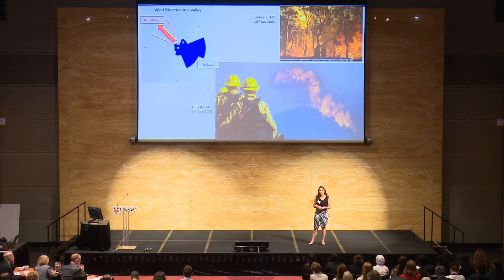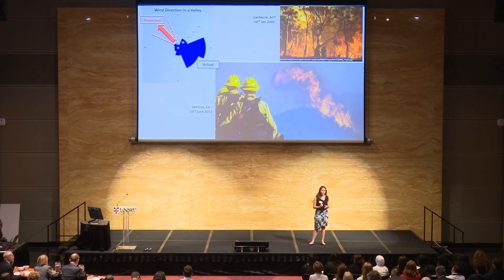So the solution to this problem so far has been to simplify the equations. We make a few assumptions here and average a few things there, and we get the results quickly. And across large areas, these results are still broadly accurate. But in my research, and as you can see here, as you move into the hills and valleys of the mountains, these models are significantly flawed.